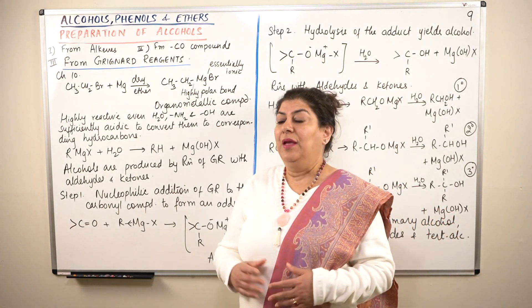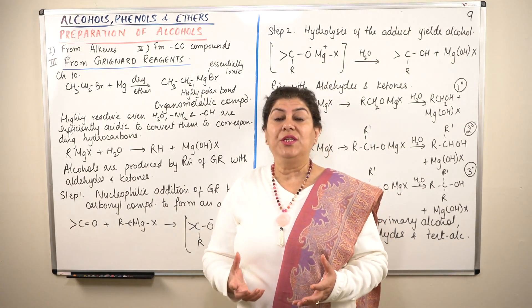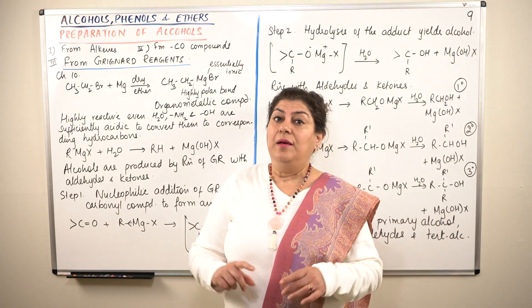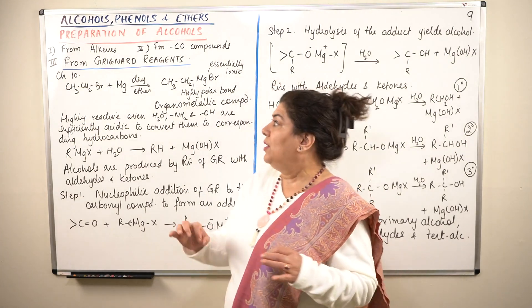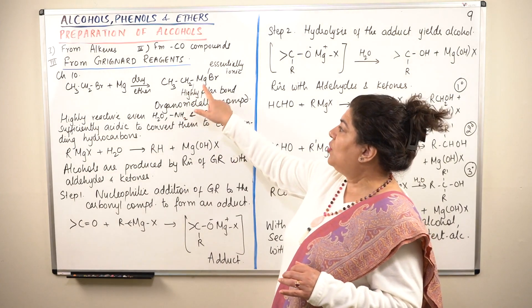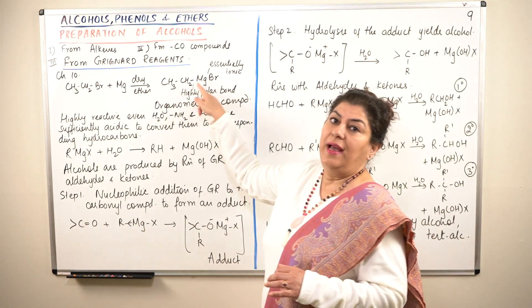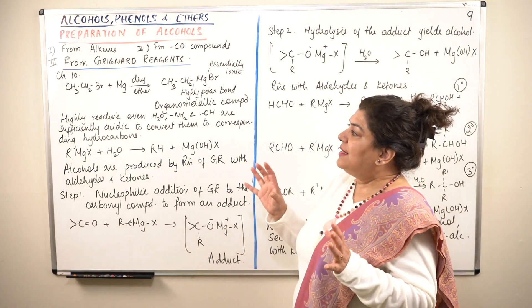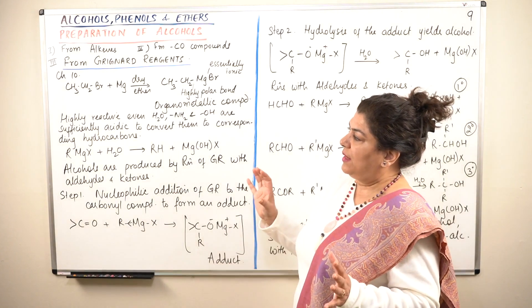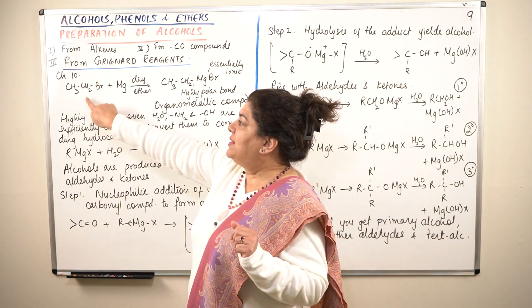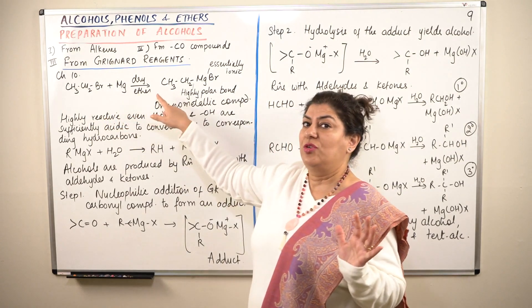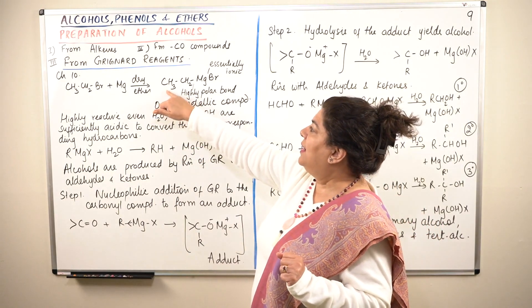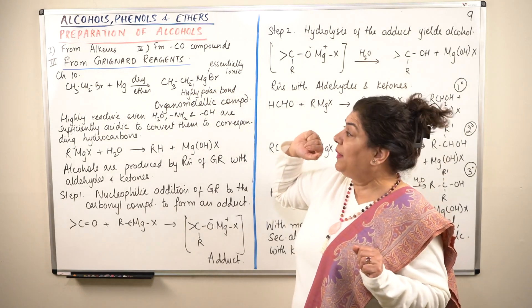I'll take you back to chapter 10 where we talked about Grignard reagents. As you already know, Grignard reagents are organometallic compounds — they are alkyl, vinyl, allyl, or aryl magnesium halides. For example, CH3CH2Br reacts with magnesium in the presence of dry ether to form a Grignard reagent. In this case it is ethyl magnesium bromide.